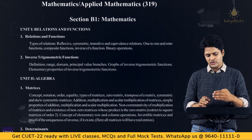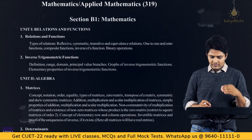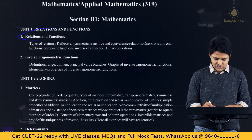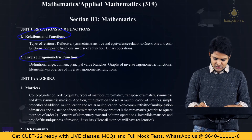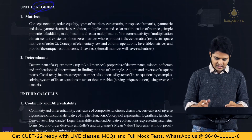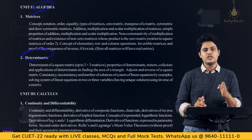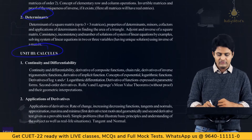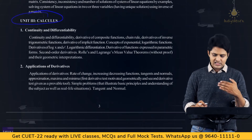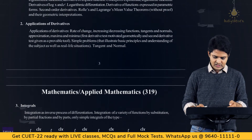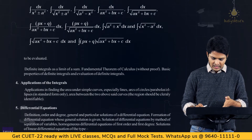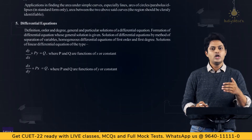Section B1 covers all the standard school mathematics. Topics include relations and functions, inverse trigonometric functions, algebra with matrices and different kinds of matrices, determinants up to 3x3 matrices, and calculus covering continuity, differentiation, and applications of derivatives.